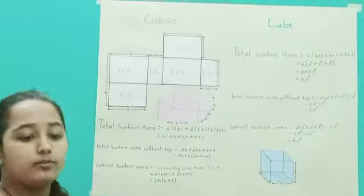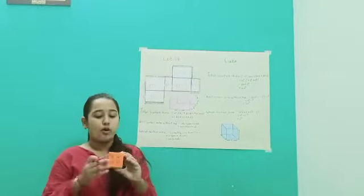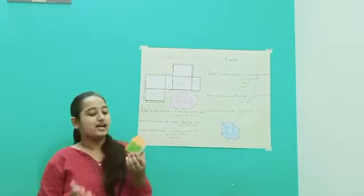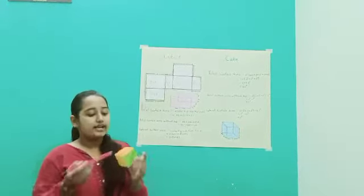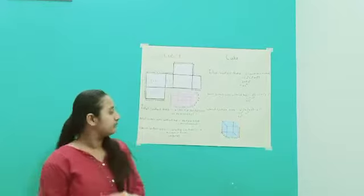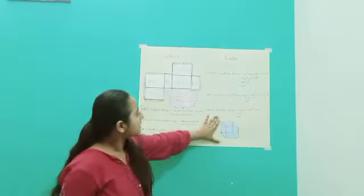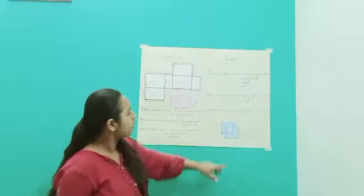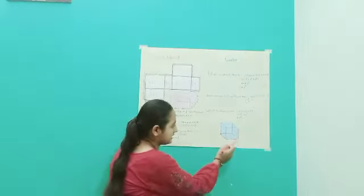Now for the cube. I have taken a Rubik's cube whose all surfaces are squares, and I have assumed one side will be L. I have made a diagram also where all these sides are L, as you can see here.